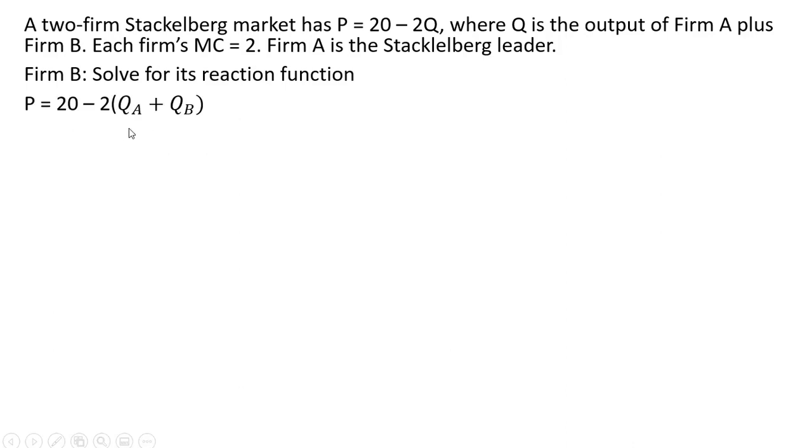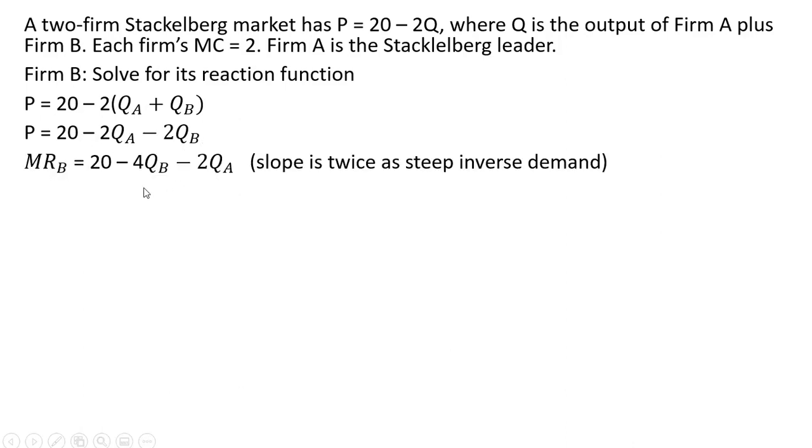We take the price equation. For Q, I'm just putting in the output of firm A plus the output of firm B. Simplifying that and recognizing that the marginal revenue for firm B is the price equation with a slope that is twice as steep.